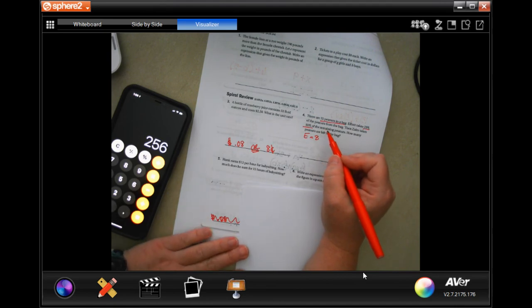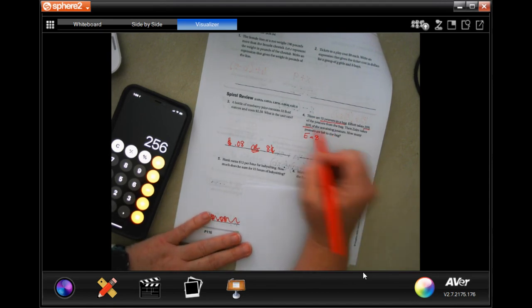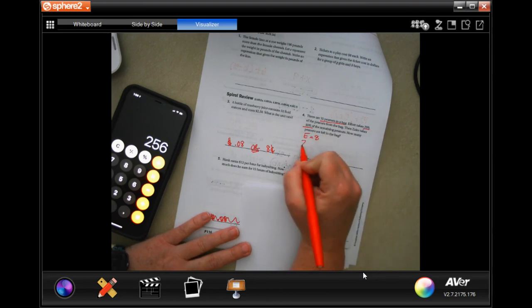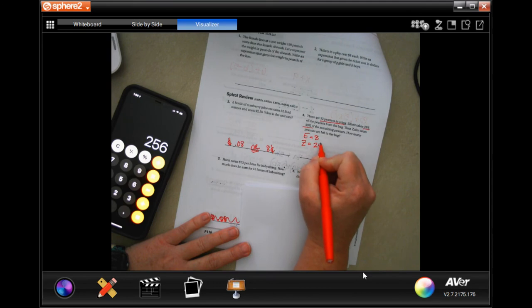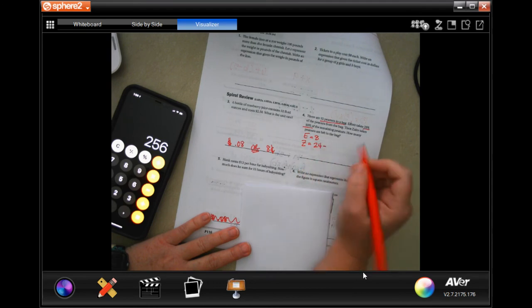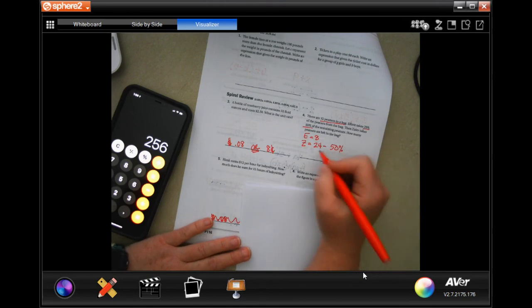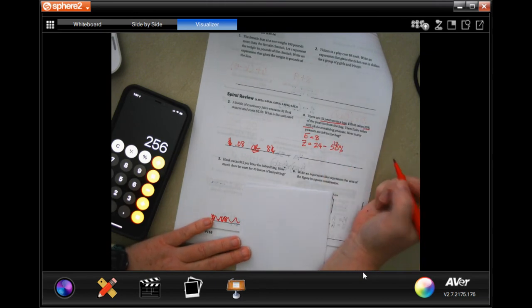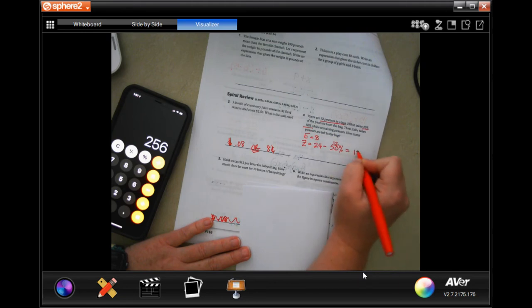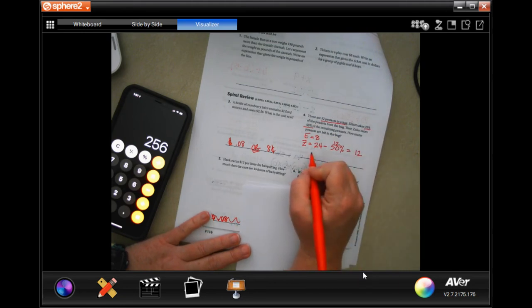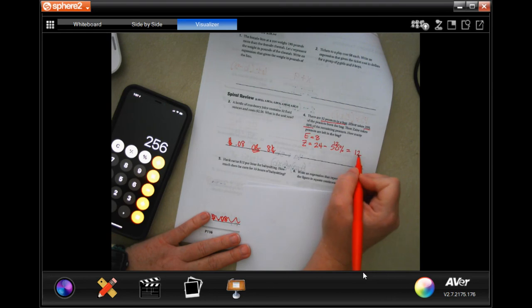Well, 32 minus eight is going to be 24. And 50% of that. Minus 50%. Well, half of 24 is 12, which means 12.